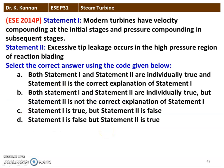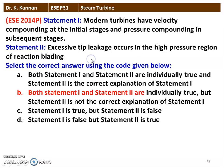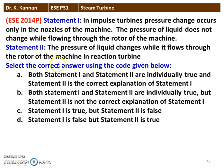Next question from the 2014 question paper. Statement 1: modern turbines have velocity compounding at the initial stages and pressure compounding in the subsequent stages — that is correct. Statement 2: excessive tip leakage occurs in the high pressure region of the reaction turbine — that is also correct. Both statements 1 and 2 are individually true, but statement 2 is not the correct explanation for statement 1. So 1 and 2 are individually true.